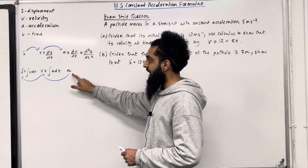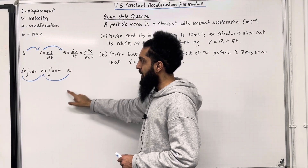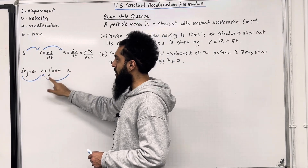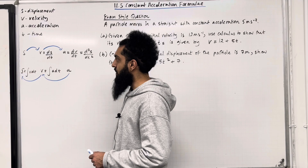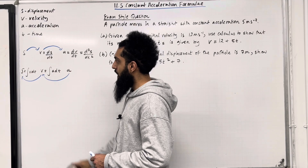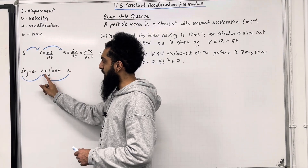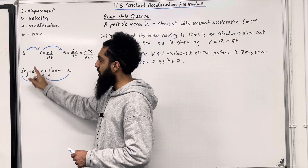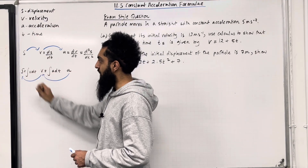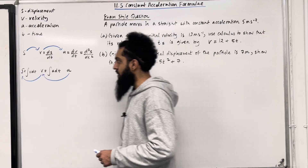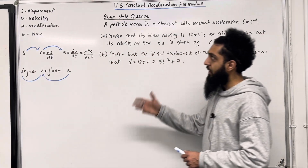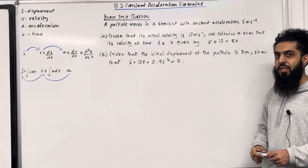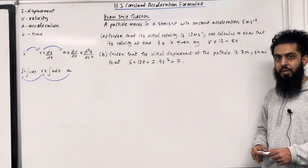If you are given the acceleration, the velocity is equal to the integral of the acceleration with respect to time. If you are given the velocity, the displacement is equal to the integral of the velocity with respect to time. These are the key facts of 11.5 constant acceleration formally.